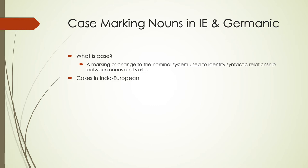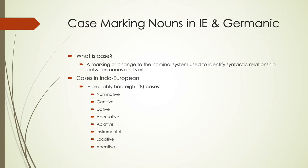In Indo-European there were likely eight different cases. The most common ones — nominative, genitive, dative, and accusative — are the ones we'll see in later stages of English as well. They also had ablative, instrumental, locative, and vocative cases.